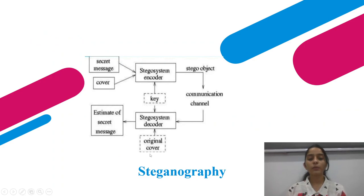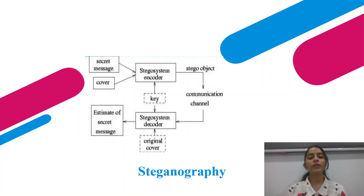Now we'll see how steganography actually works. We give a secret message and a cover file as input to the stego system encoder. The encoder converts the secret message and cover into a stego object. If the receiver has the key, the stego system decoder will separate the secret message from the original cover, and the message will be revealed.